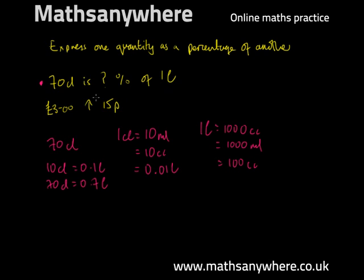We then need to decide what percentage of 1 liter 70 centiliters is. Well, 100 centiliters is 100% of 1 liter. That is to say, if we converted that to liters, 1 liter is 100% of 1 liter. I mean, I think that's quite a straightforward example of a starting point for us.